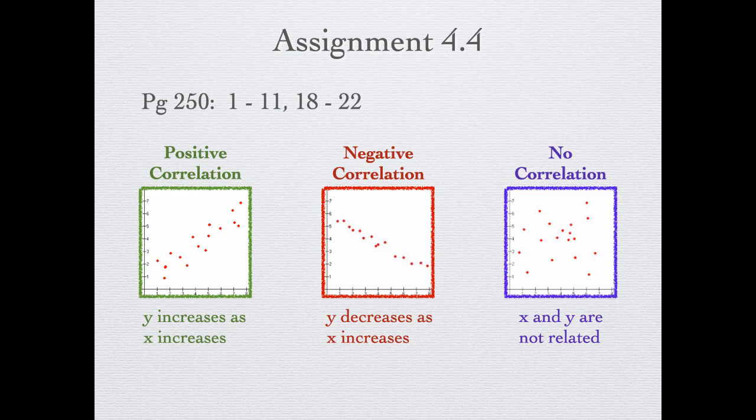That is all for section 4.4, Scatter Plots and Trend Lines. Today we talked about correlation — whether it is positive, negative, or no correlation. We also looked at how to make a scatter plot, draw a line of best fit, and write the equation for it. Make sure you show all your work: give your scales, the points you use for your line, and your line equations. Thank you for watching and have a nice day.